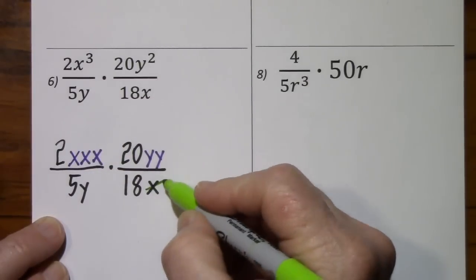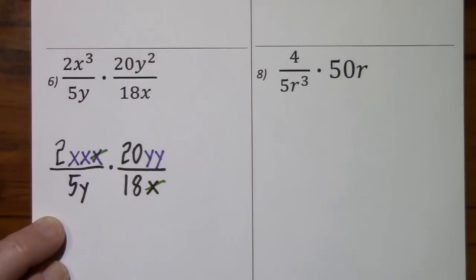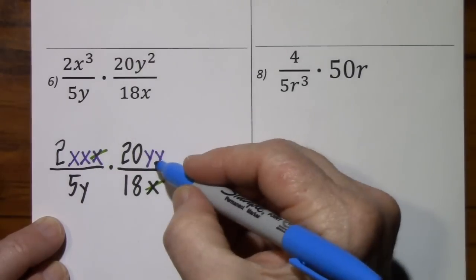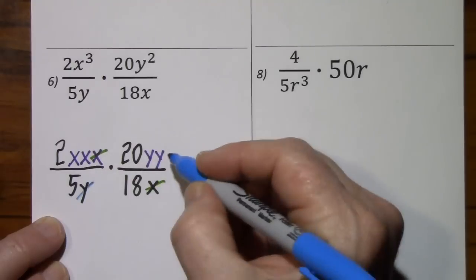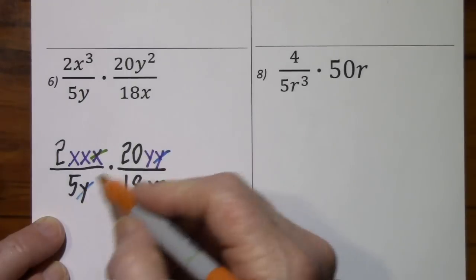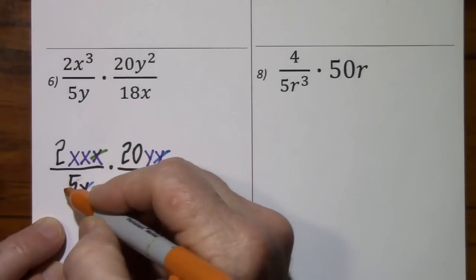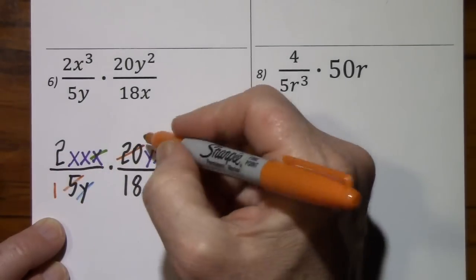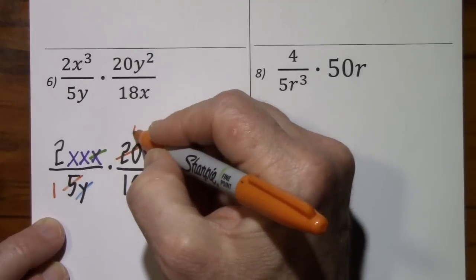And we'll say x cancels x. We have y cancels y. Five is a common factor. Five goes into five once, goes into 20, four times.